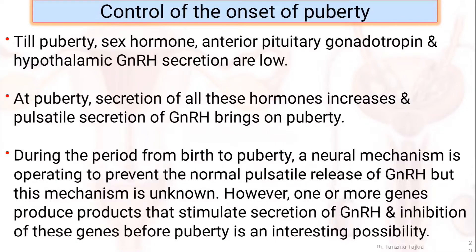During the period from birth to puberty, a neural mechanism operates to prevent the normal pulsatile release of gonadotropin-releasing hormone, but this mechanism is unknown. However, one or more genes produce products that stimulate secretion of gonadotropin-releasing hormone, and inhibition of these genes before puberty is an interesting possibility.